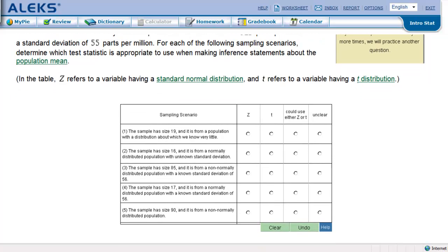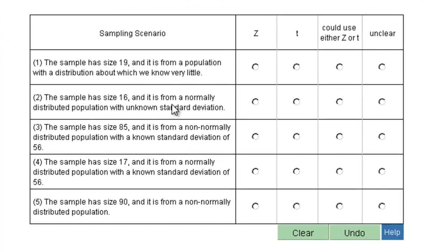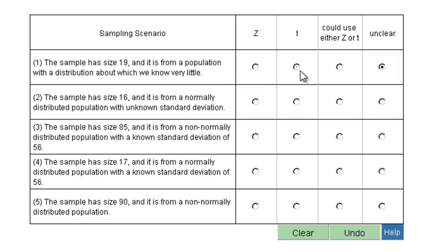Alex is a little finicky here. The first scenario: the sample has a size of 19, and it is from a population with a distribution about which we know very little. Well, it's unclear — unless we know that it's normally distributed, we cannot use T. And because we don't know that it's not normally distributed, we can't say definitely that we can't. So it's unclear.